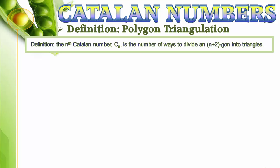To get a feel for this definition, let's consider a few cases. We start with n equals 0, so we have a 2 gone. Houston, we have a problem. 2 gones don't have triangles in them. Well, for the sake of this definition, there is one way to divide a 2 gone into triangles. The reason will become clear later.